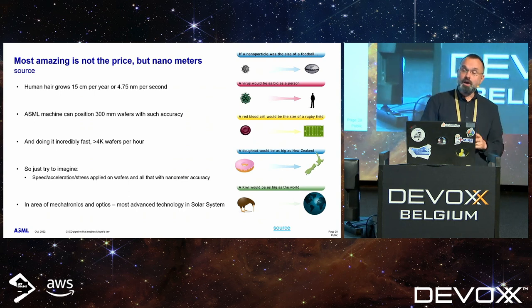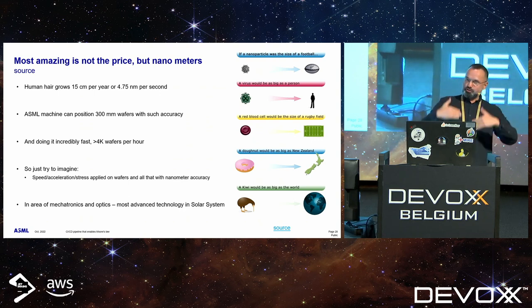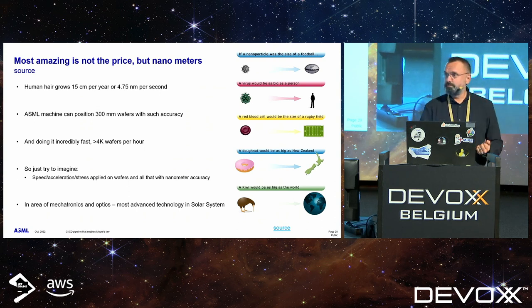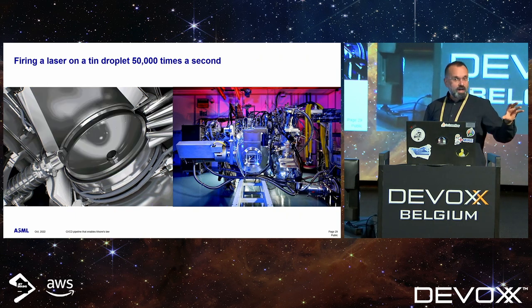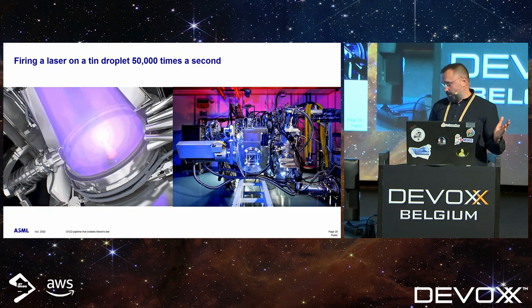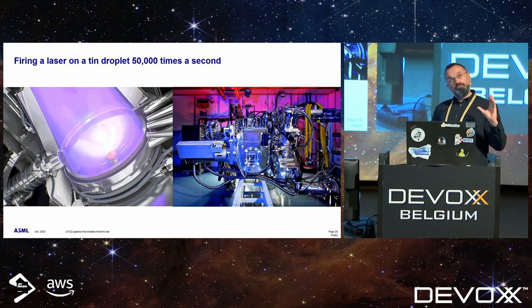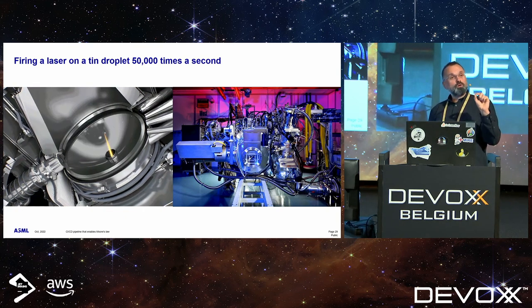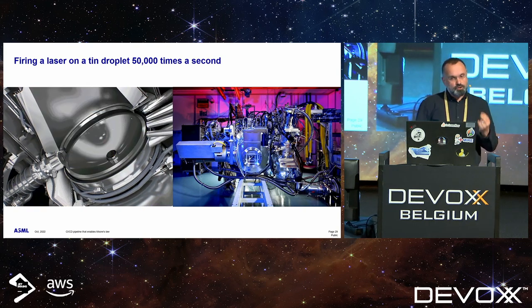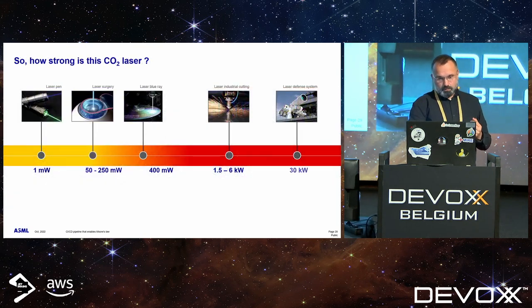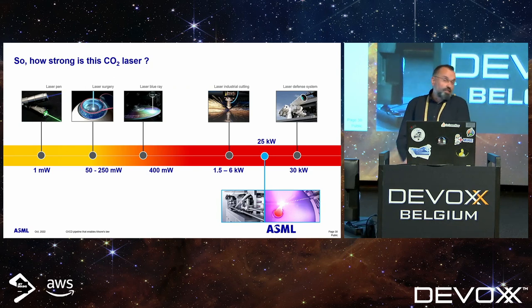Software is important. Without software, the machine is dead. Software is the soul of the twin scan. And other cool thing: in order to produce EUV light, it's literally Star Wars technology. We have an uber-powerful laser which shoots into liquid tin — not evaporating it, but putting it in a plasma state. The power of this laser is basically close to a military one. And of course it's controlled by software.